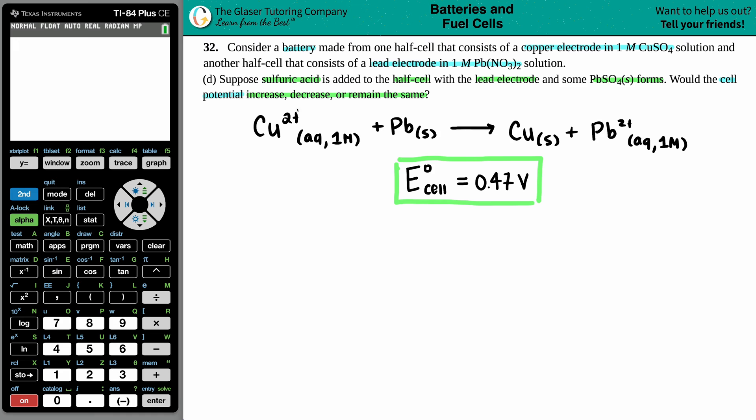And for letter B, we found out the whole entire equation here, which is Cu2+ aqueous. That's one molar solution because it's one molar of the copper plus the lead solid yields copper solid plus Pb2+ aqueous. And that's one molar because it's one molar Pb(NO3)2.